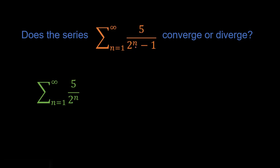If you think about it, when n gets really big, 2 to the n is going to get really big and that minus 1 is going to be pretty insignificant anyway. So whatever happens to this geometric series is probably really similar to what happens to this one, because that minus 1 when n gets big isn't going to have that big of an effect. So if we know what happens to this series, we could know what's going to happen to this series which looks pretty similar.